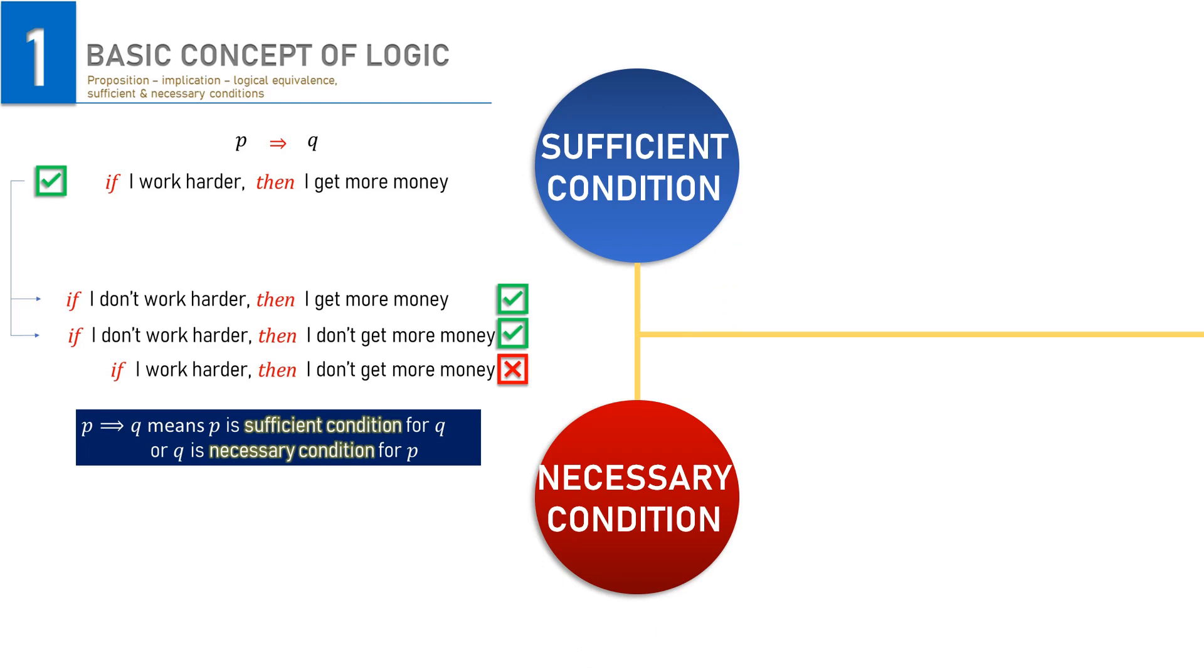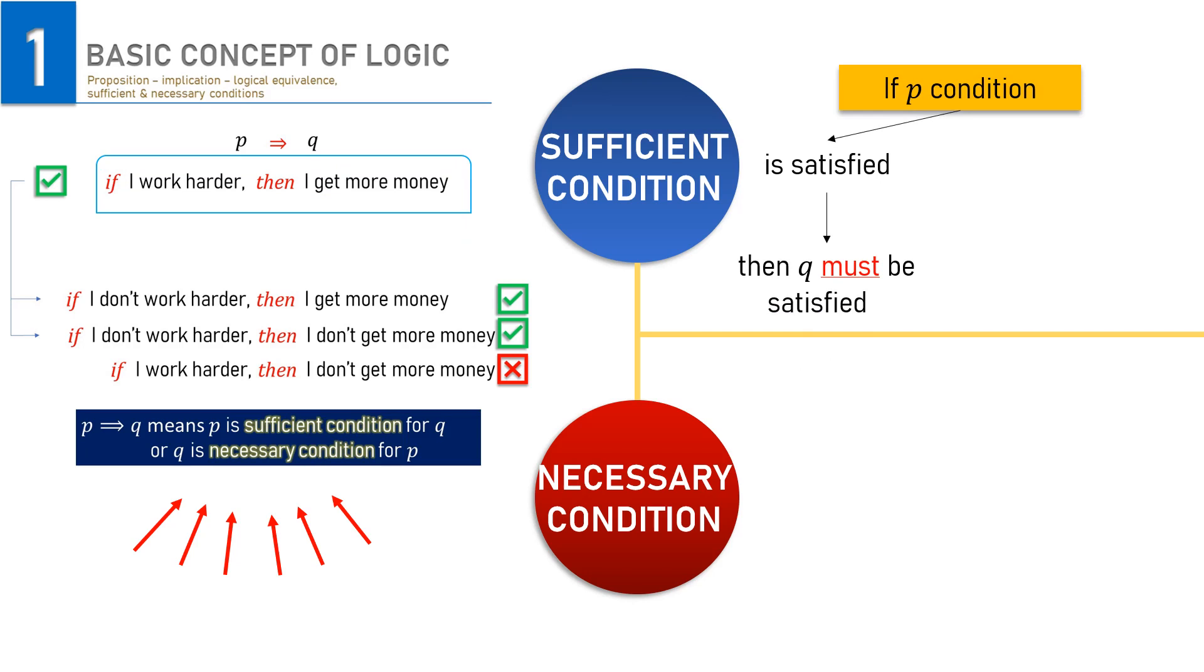Let's check now how to understand both sufficient and necessary condition in our example. I recaptured the example before I left here. Please focus on the true statements only. Okay. With P as a sufficient condition, it means that by satisfying P, then Q must be satisfied. Or if I work harder, then I must get more money.